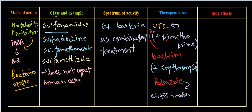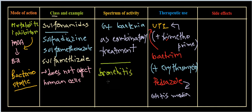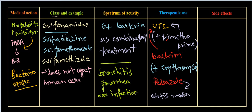Aside from combinatory therapy with trimethoprim and erythromycin, we can also use sulfonamides to treat bronchitis, gonorrhea, and different ear infections. These are the different infections sulfonamides can be used against.